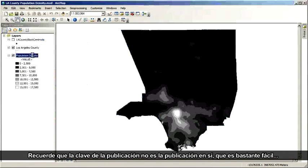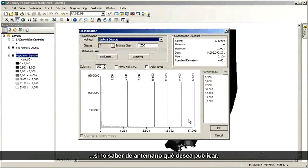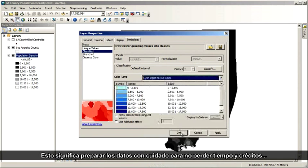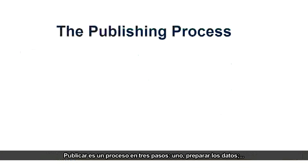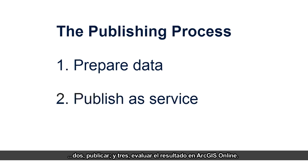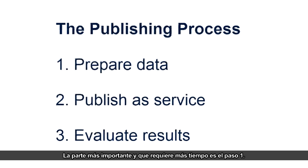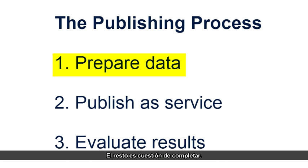Keep in mind that the key to publishing is not the publishing itself, which is fairly easy, but knowing in advance what it is you want to publish. This means careful data preparation, so you don't waste time and credits having to redo things. Publishing is a three-step process: one, prepare your data; two, publish; and three, evaluate it in ArcGIS Online. The most time-consuming and important step is step one — the rest is follow-through.